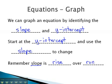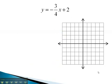Let's take a look at an example where we can see the graph found from the equation of the line. In this equation, y equals negative 3 fourths x plus 2, we remember that slope-intercept form is y equals mx plus b.